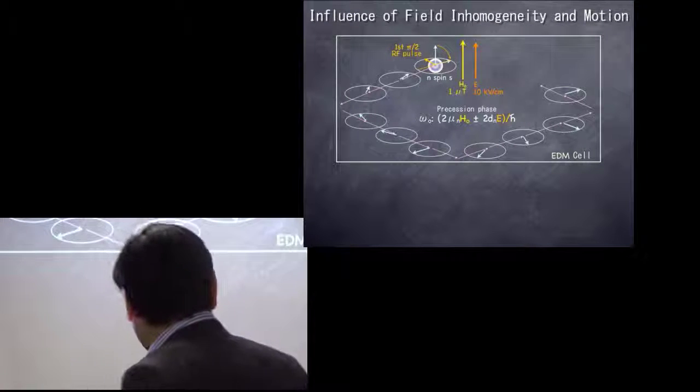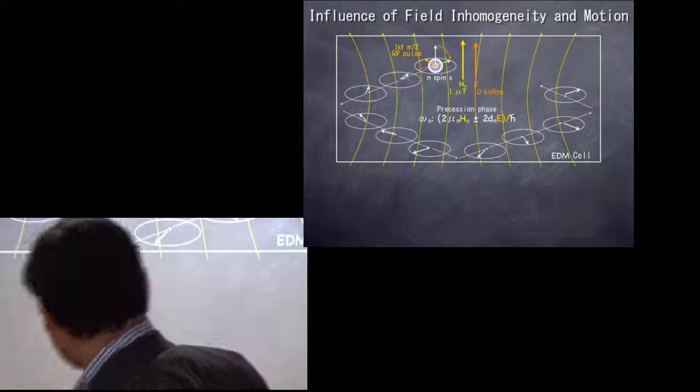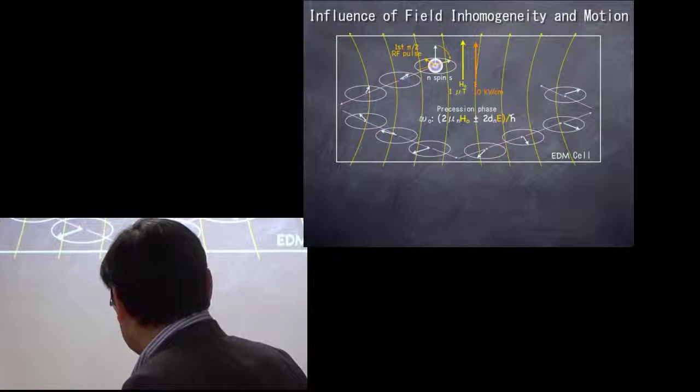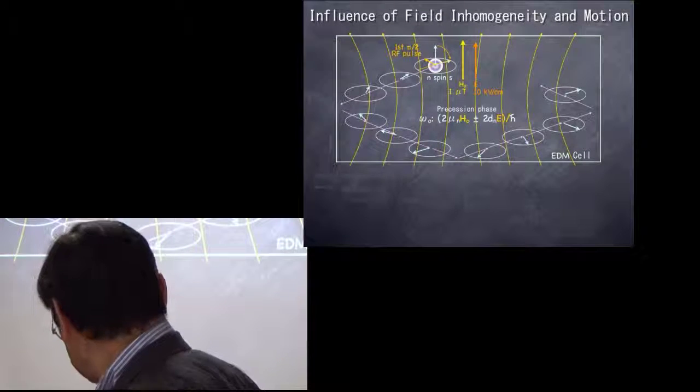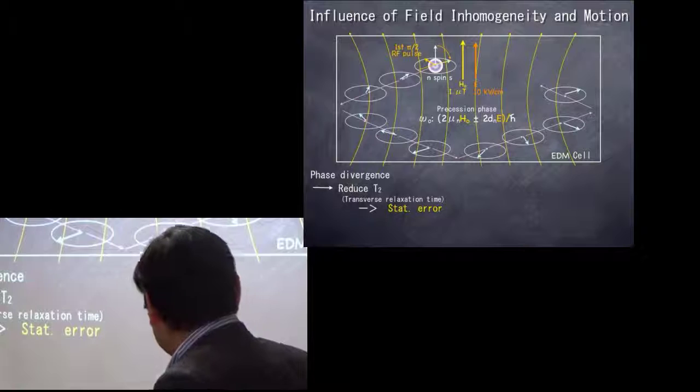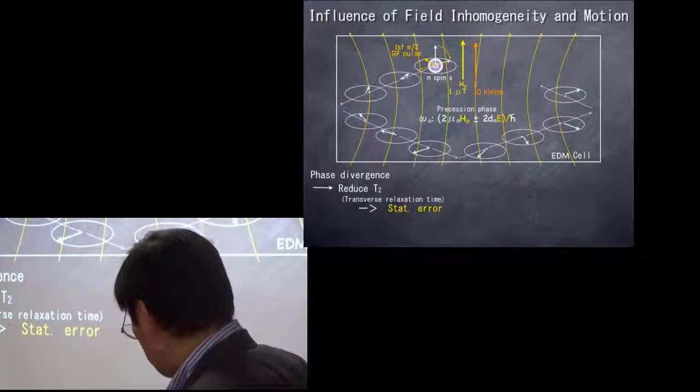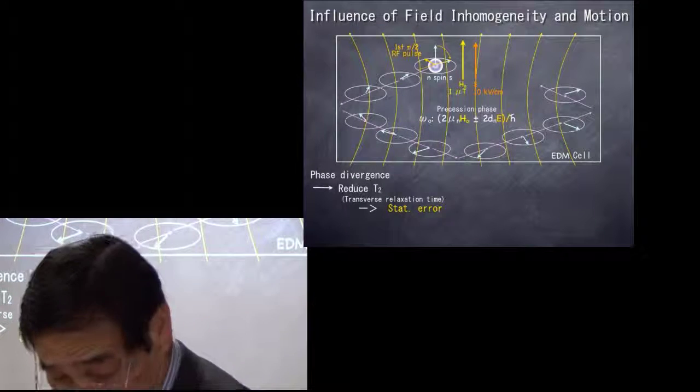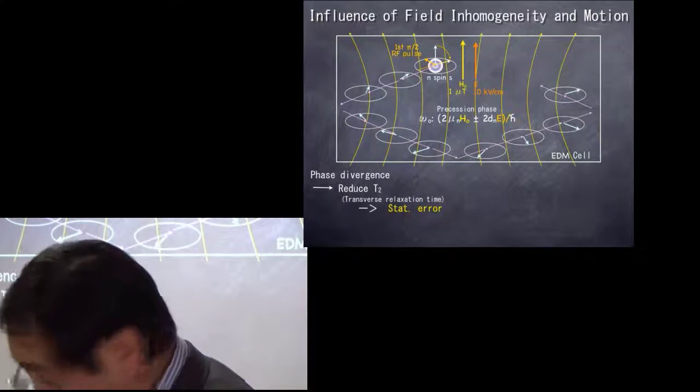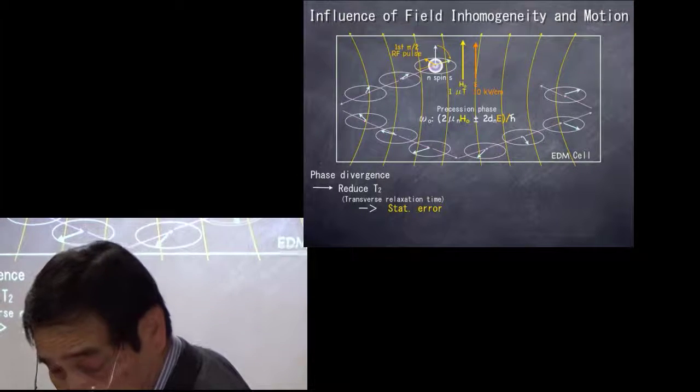The neutron spins are moving around inside the cell. So if we have inhomogeneity in the magnetic field, then the precession phase is diverse. So that transverse relaxation time is reduced, and that gives rise to the statistical error.